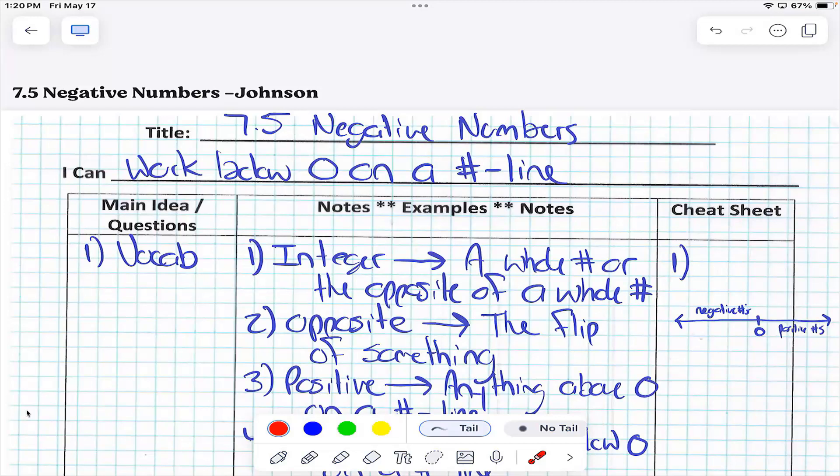What's an integer? A whole number or the opposite of a whole number. So it can't have a decimal or a fraction part? No.